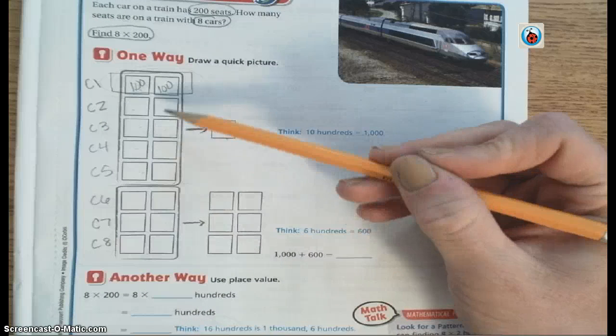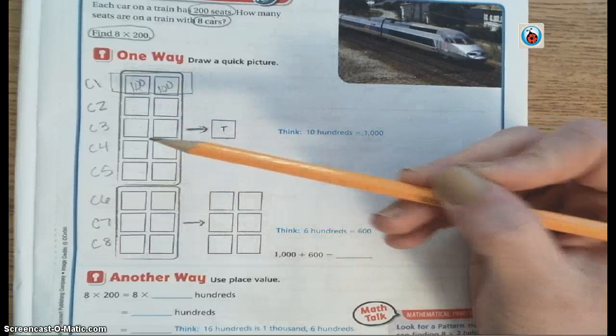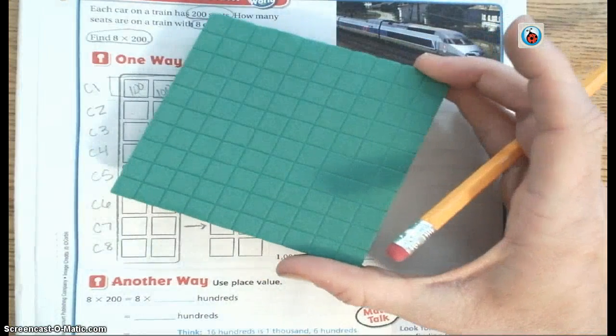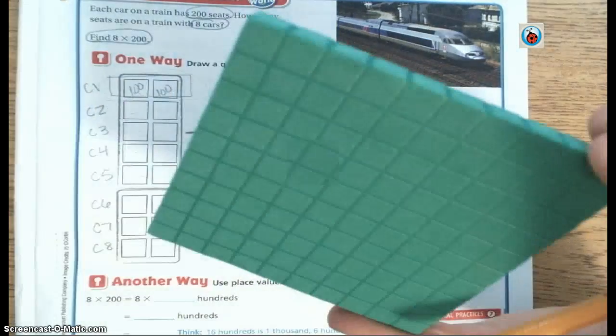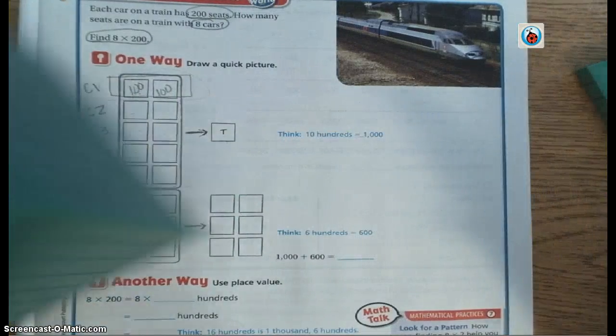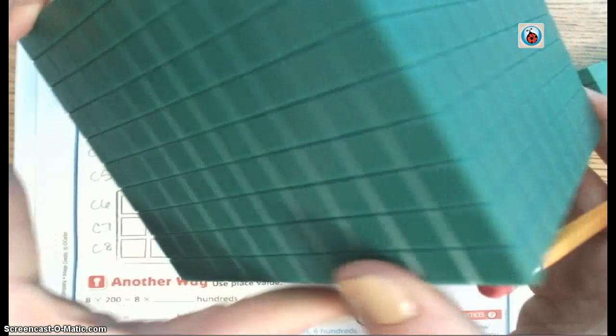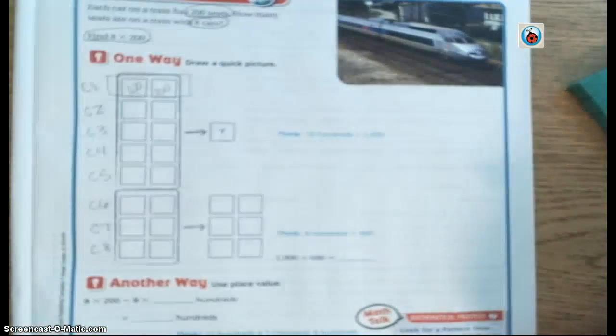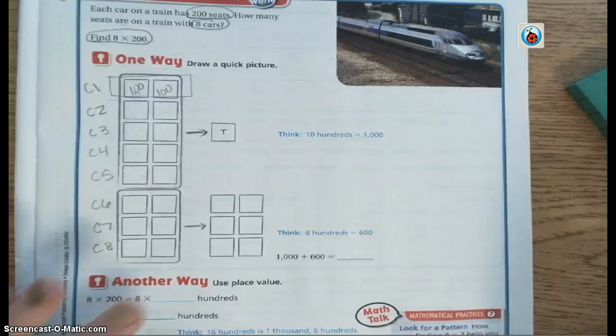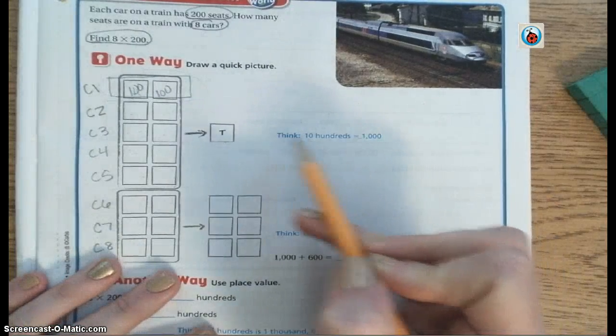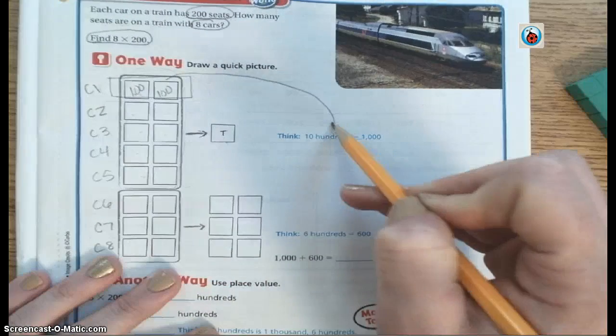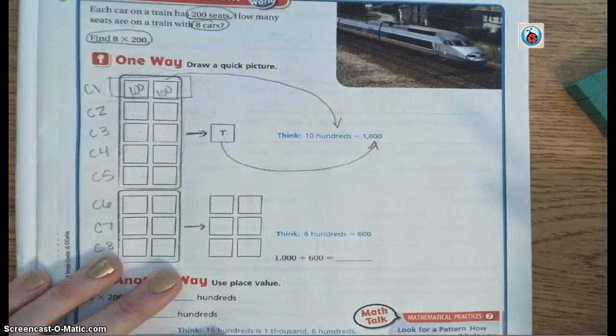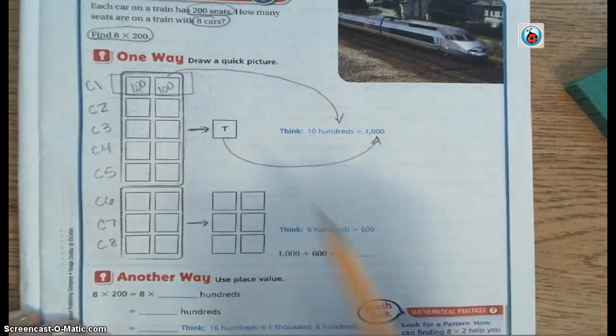So this part that's circled would represent 10 of these flats. Or we know that another way to represent 10 of those flats would be, it's kind of going to be weird, but you can see this cube, that's worth 1,000. So you're going to think in your head. 10 hundreds right here are equal to, is equal to 1,000.